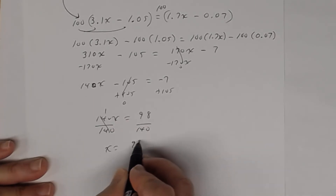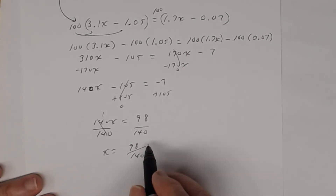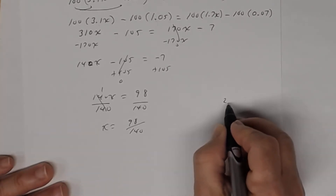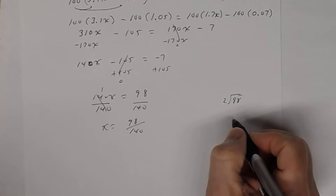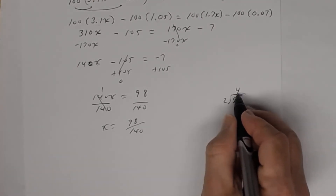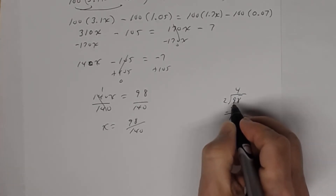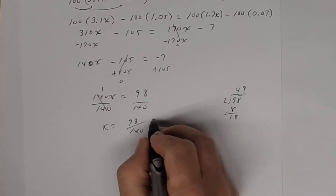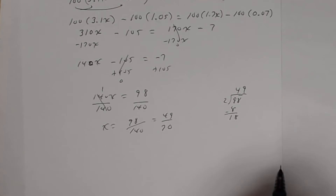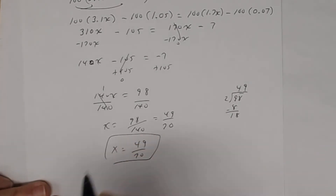Reducing 98/140: both are even, so divide by 2 to get 49/70. That is the solution: x = 49/70. The fractional approach using improper fractions would give the identical result — it does not matter which form you use.